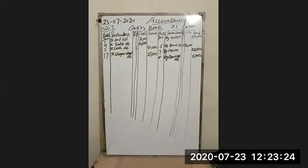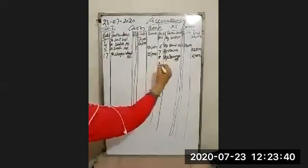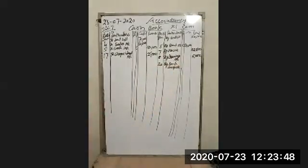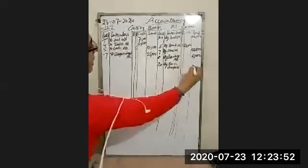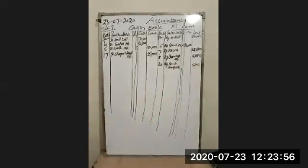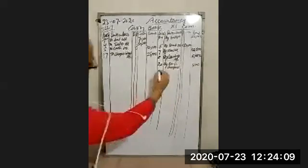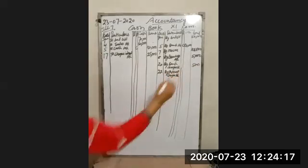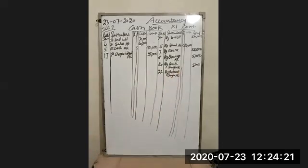January 20th: bank charges paid. This goes on the payment side — credit side — in the bank column as 'by bank charges account' — 500. Date is January 20th. January 22nd: interest charged by bank. This also reduces the bank balance, so it goes on the credit side — 'by interest charges account' — 25,000. Date is January 22nd.